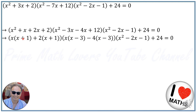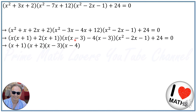Now we have (x+1) in two places, so we can factor (x+1) between those two terms. It gives us (x+1)(x+2) for the first quadratic and (x-3)(x-4) for the second, and we write down the rest.